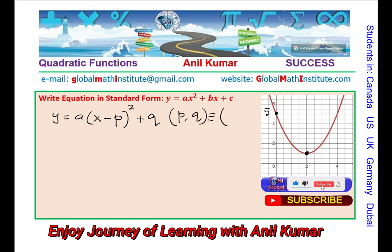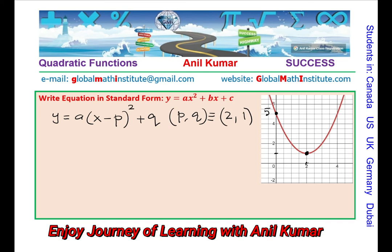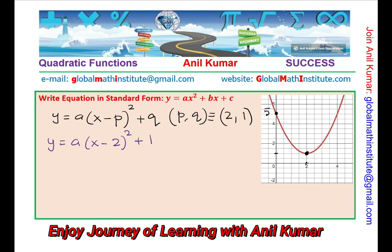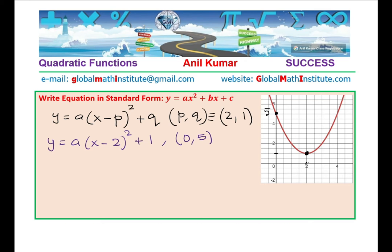In our case, the vertex is at x equals 2 and y equals 1, so we write y equals a times (x minus 2) squared plus 1. To find the value of a, we use the known point which is (0, 5), the y-intercept. So we plug in 0 for x and 5 for y.